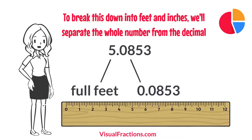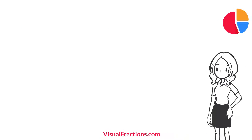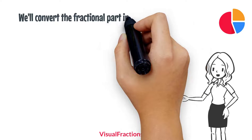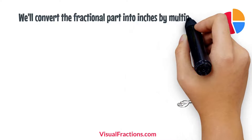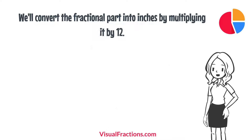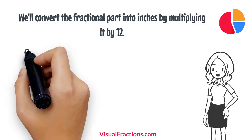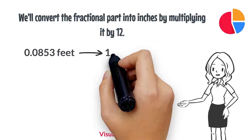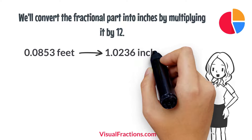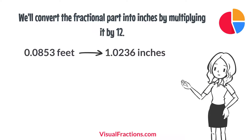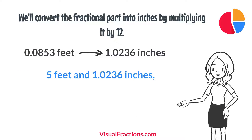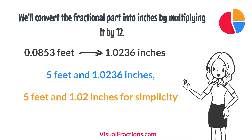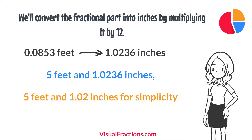Since one foot contains 12 inches, we'll convert the fractional part into inches by multiplying it by 12. Thus, 0.0853 feet is approximately 1.0236 inches. Combining these gives us 5 feet and 1.0236 inches, which we can round to 5 feet and 1.02 inches for simplicity.